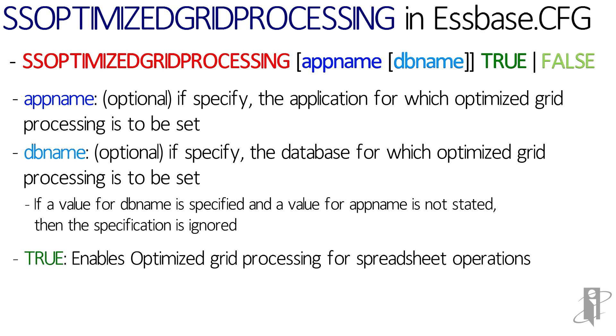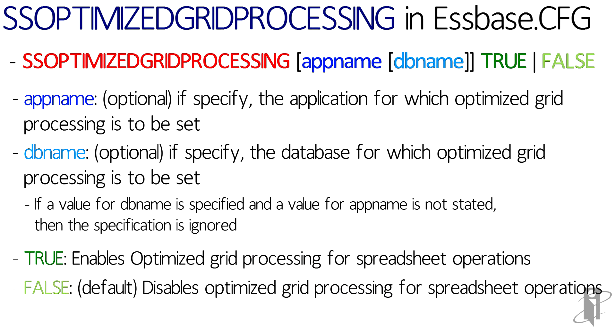Then, of course, you have the toggle of true and false, which enables and disables the optimized grid processing for the spreadsheet operations. And, of course, the default value is false.